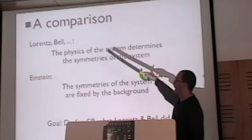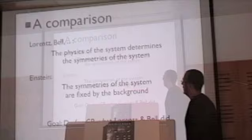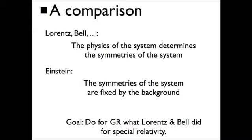For Lorentz, the physics of the system, the matter, defines the symmetries. For Einstein, it's the symmetries of the system that are fixed in the background, and the matter has to obey by these. So what I want to do is ask the following question.